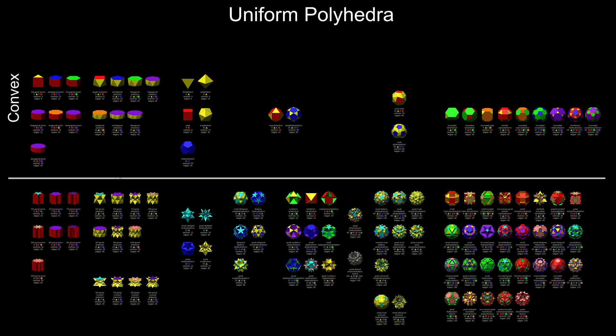The chart is broadly divided into convex figures at the top and non-convex figures at the bottom, but also between prismatic shapes on the left and the shapes with 3D symmetry on the right.